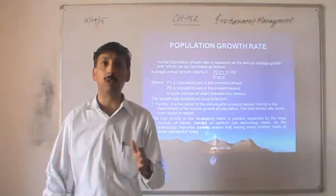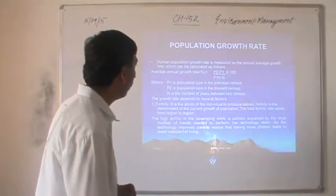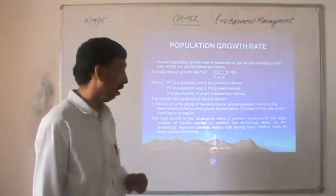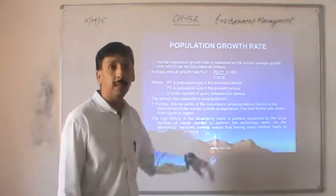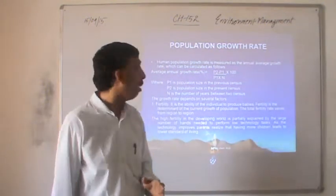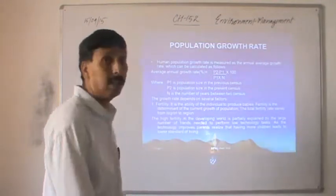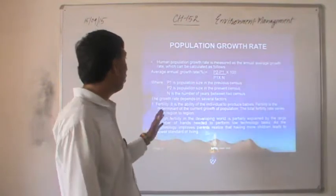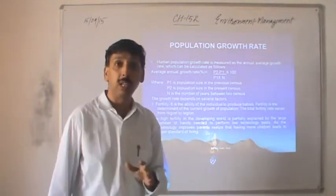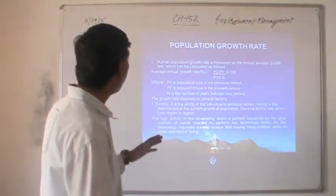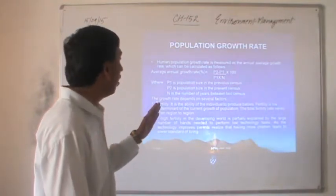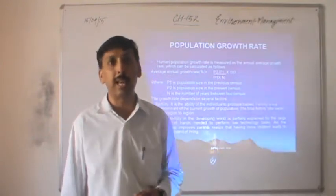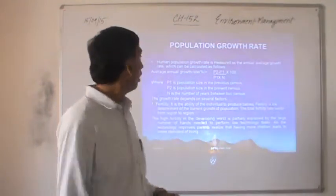How is population growth rate affecting the overall increase in population? Human population growth rate is measured as the annual average growth rate, which can be calculated from the following formula: Average annual growth rate = (P2 − P1) / (P1 × N) × 100. Here P1 is the population size in the previous census, P2 is the population size in the present census, and N is the number of years between the two censuses.